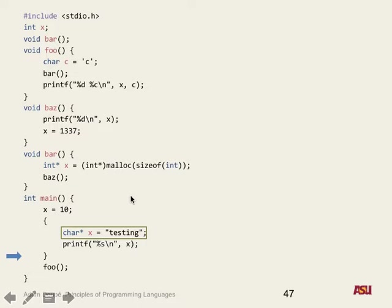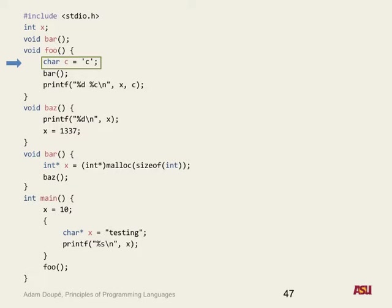What happens when we leave this scope? X gets automatically deallocated, so X no longer exists after that point. Then we go into function foo and see the character C — what type of allocation is this? Stack. And what's the size of C? One byte. Pointers are always the size of the address space on your system — four bytes on 32-bit, eight bytes on 64-bit.